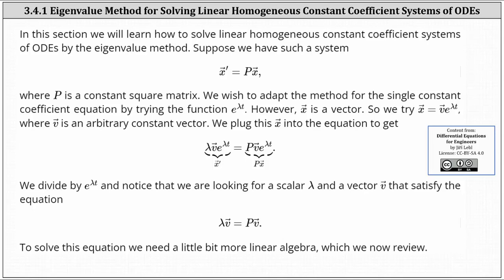Suppose we have a system represented by the vector equation x prime equals P times x, where P is the constant matrix and x and x prime are vector-valued functions. We wish to adapt the method for the single constant coefficient equation by trying the function e to the lambda t.